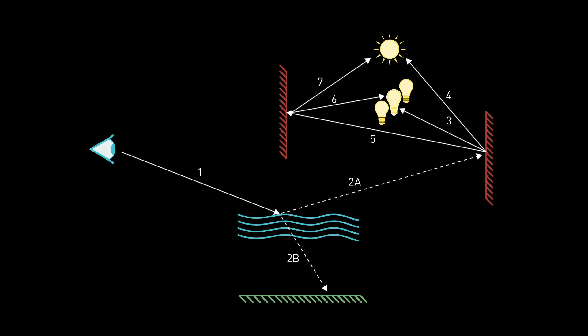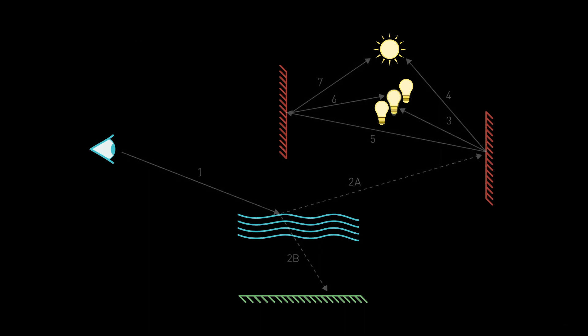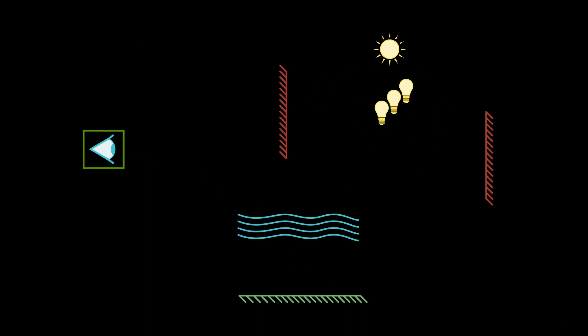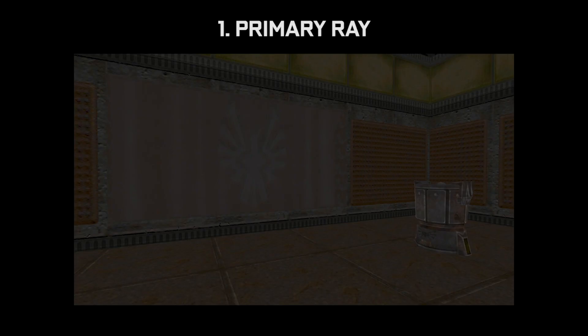Hi, this is Tony Tomasi with NVIDIA, and I'm here to talk to you about Quake 2 RTX and an advanced form of ray tracing called path tracing. What you see here is actually an overview of the path tracer that we've implemented in Quake 2 RTX. We're going to start from the eye, or camera, and follow the primary ray as it traverses into the scene.